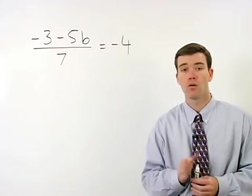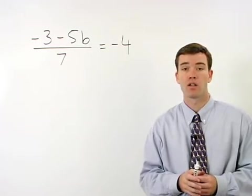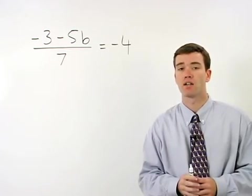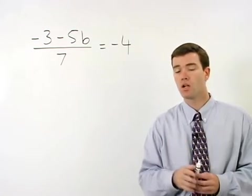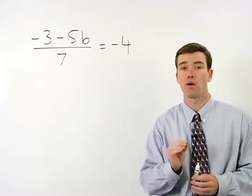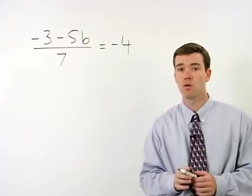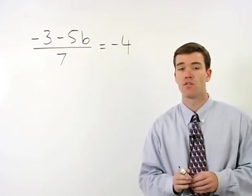We've already talked about one way of getting rid of a fraction, which is by multiplying both sides of the equation by the reciprocal of that fraction. A more common and more versatile way, however, of getting rid of a fraction is to multiply both sides of the equation by the denominator of the fraction.